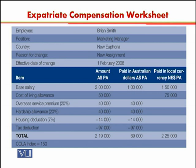There is some information needed to calculate this worksheet. First is the COLA index, which you can see in the last line of this worksheet. The COLA index for New Euphoria is 150. That is the cost of living allowance, and it is going to be calculated according to this index of 150 for this hypothetical country.